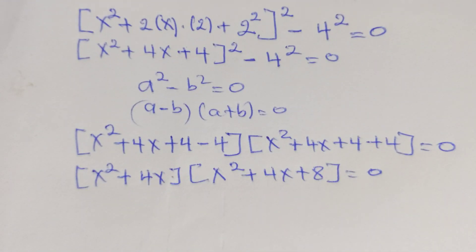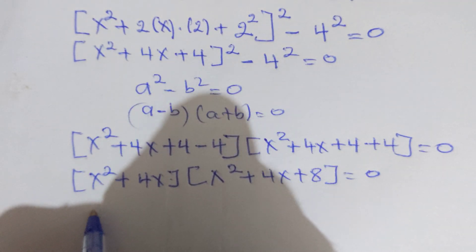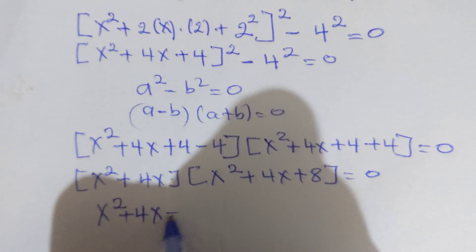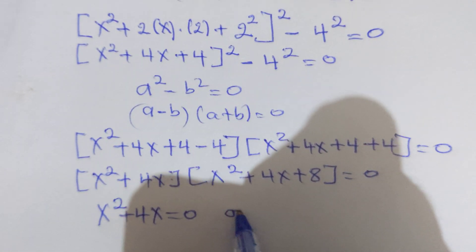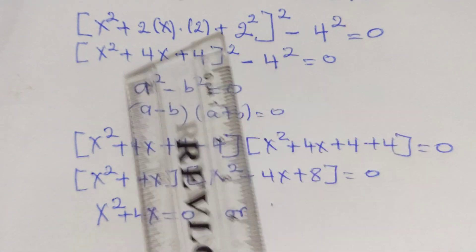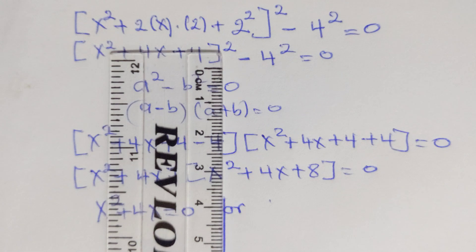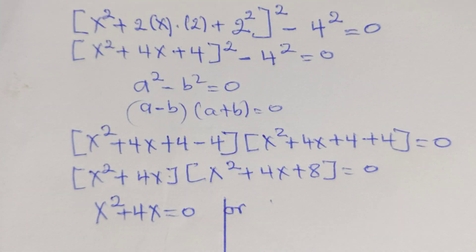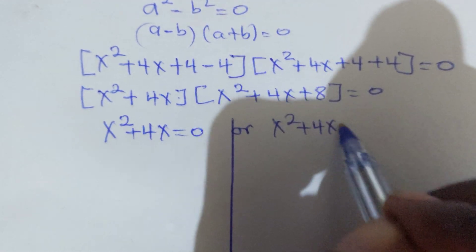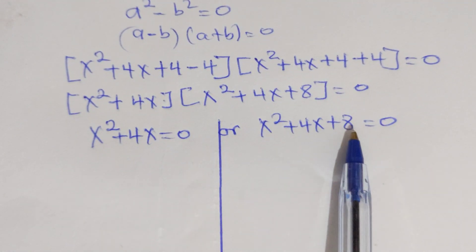Now we have two equations to solve separately. Equation 1 is x² + 4x = 0, and equation 2 is x² + 4x + 8 = 0. This is another quadratic equation, and we will solve them each independently.